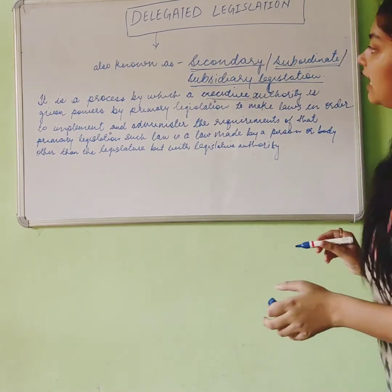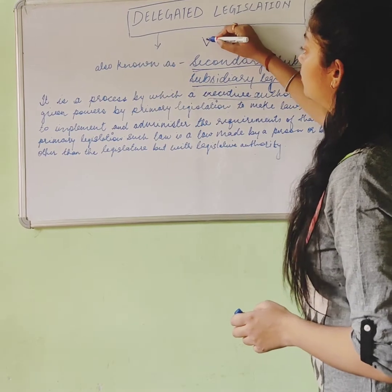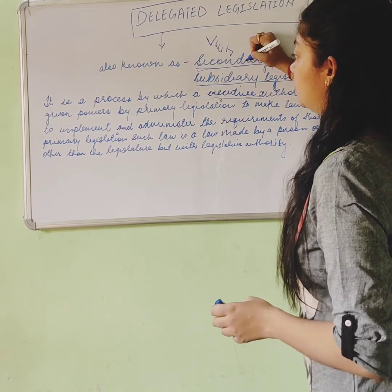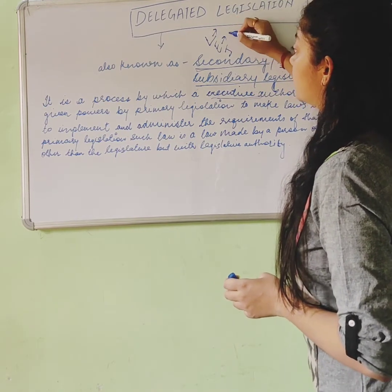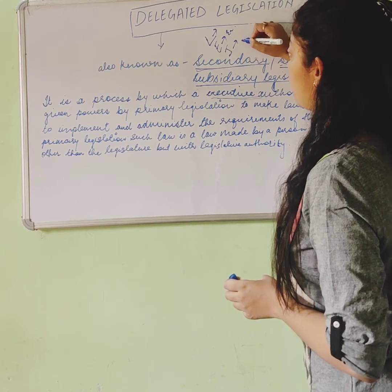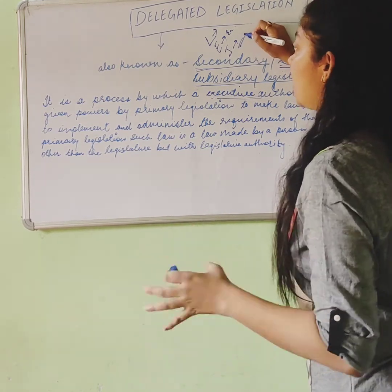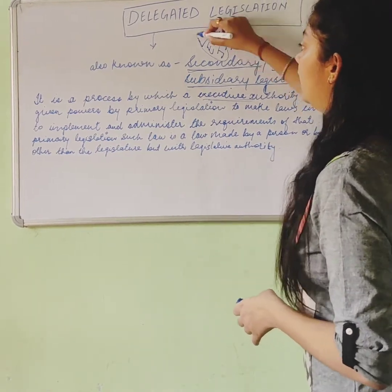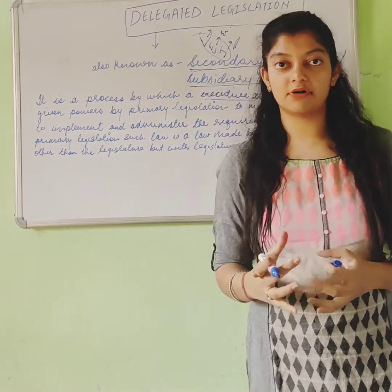We have three bodies: the legislative body, executive body, and judiciary body. The legislative body makes laws, the executive body executes them, and the judicial body resolves disputed matters. This is the concept of separation of powers, which we have covered in a separate video.